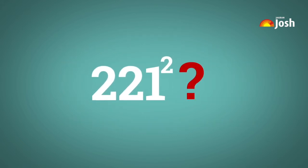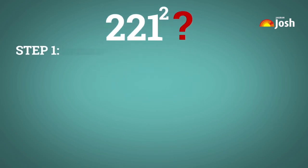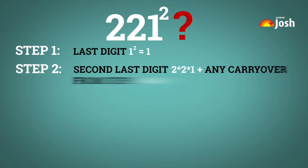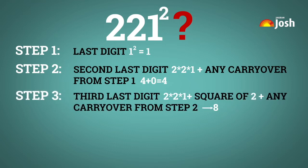Let us say we have to find the square of 221. Step 1, last digit: square of last digit 1 is equal to 1. Step 2, second last digit: 2 × 2 × 1 plus any carryover from step 1, which is equal to 4 plus 0, so the answer is 4. Step 3, third last digit: 2 × 2 × 1 plus square of 2 plus any carryover from step 2, which gives 8.